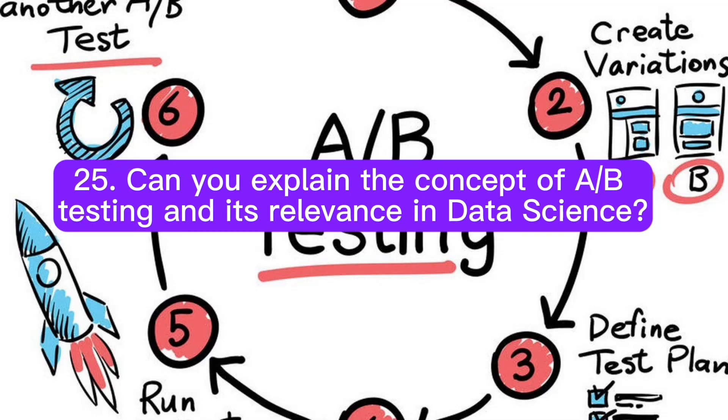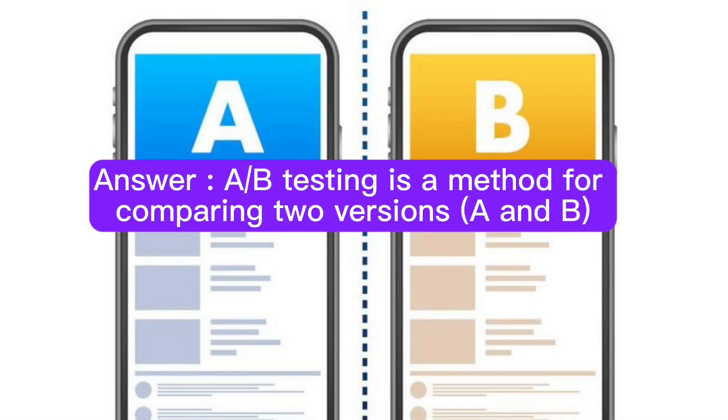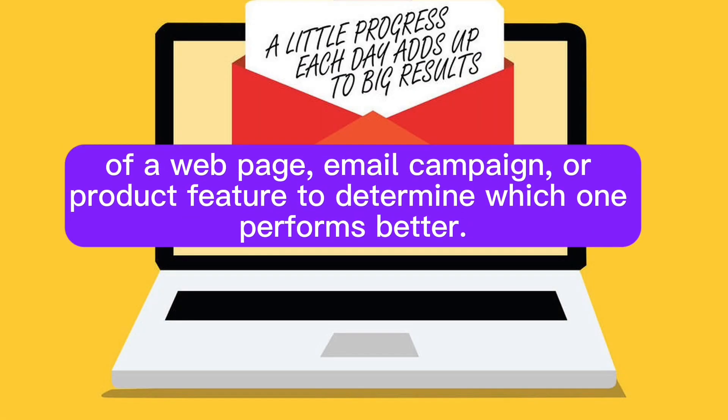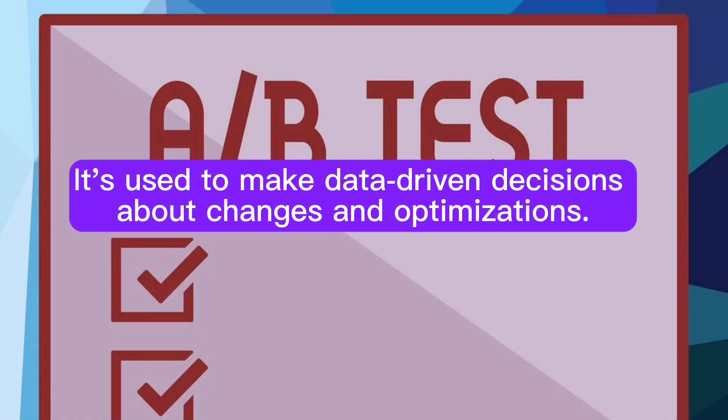Question 25: Can you explain the concept of A/B testing and its relevance in data science? Answer: A/B testing is a method for comparing two versions (A and B) of a web page, email, campaign, or product feature to determine which one performs better. It's used to make data-driven decisions about changes and optimizations.